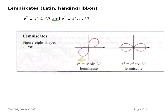Here are the lemniscates. This is a Latin word meaning hanging ribbon — it does sort of look like a ribbon people put on presents. The form of the equation is r squared equals a squared times the sine of 2 theta. The change from the rose formula is that r is squared. And there's a difference whether it's sine or cosine — as we saw with circles, that just moves the curve around in the plane about the polar axis.